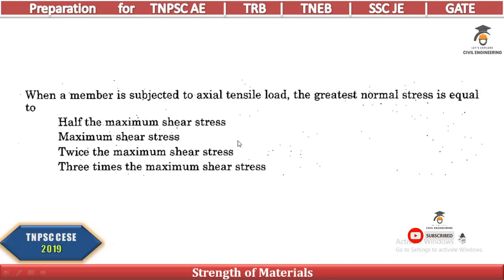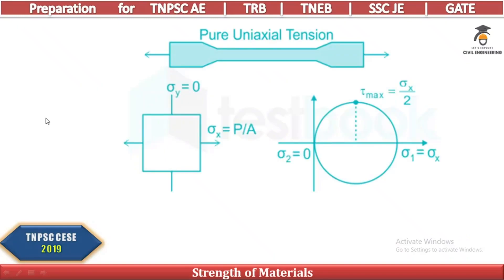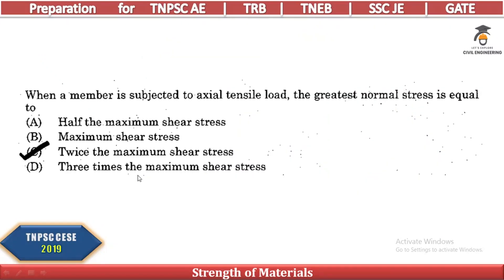When a member is subjected to an axial tensile load, the greatest normal stress equals what? Shear stress is always half the principal (axial) stress, meaning axial stress equals two times the maximum shear stress. So the answer is twice the maximum shear stress.